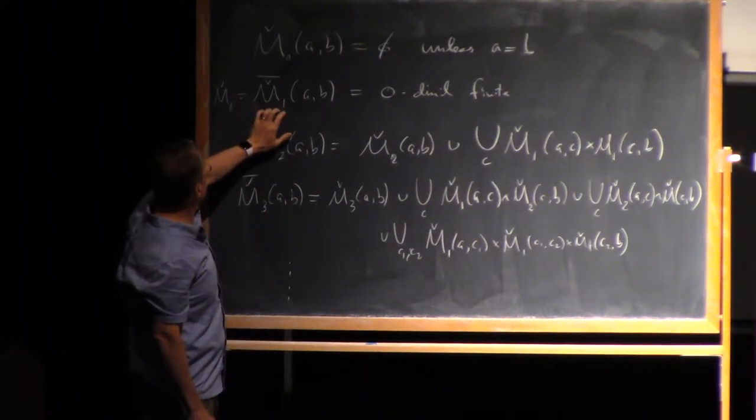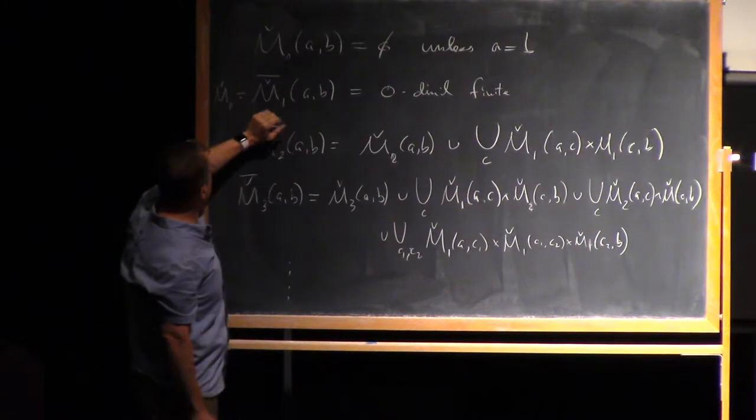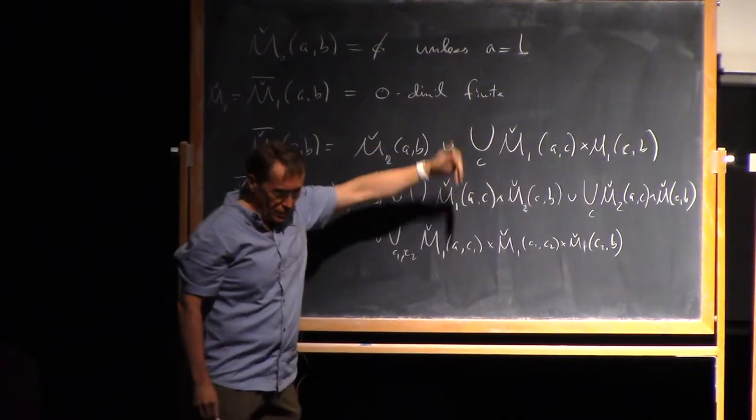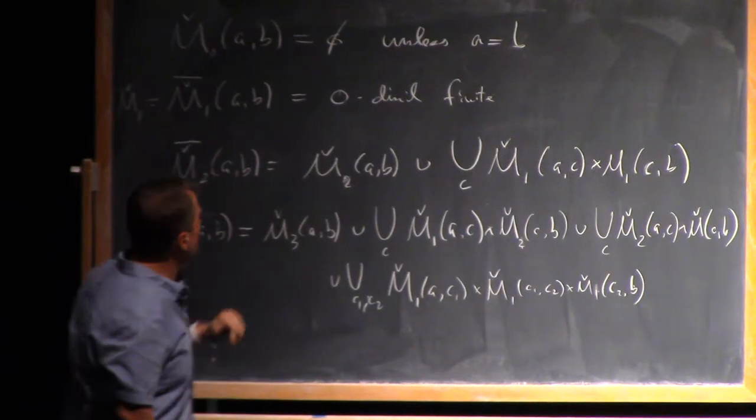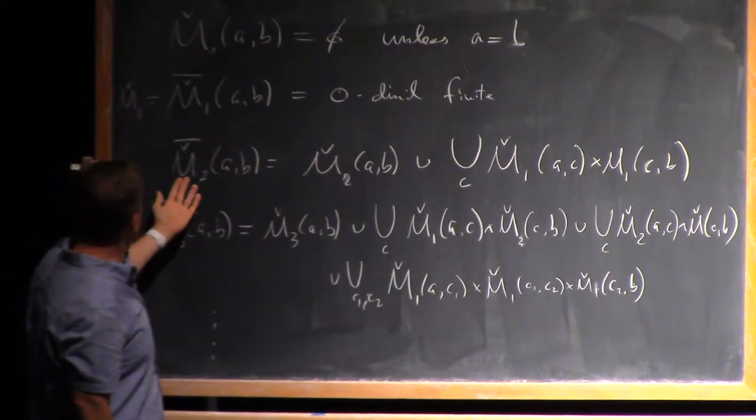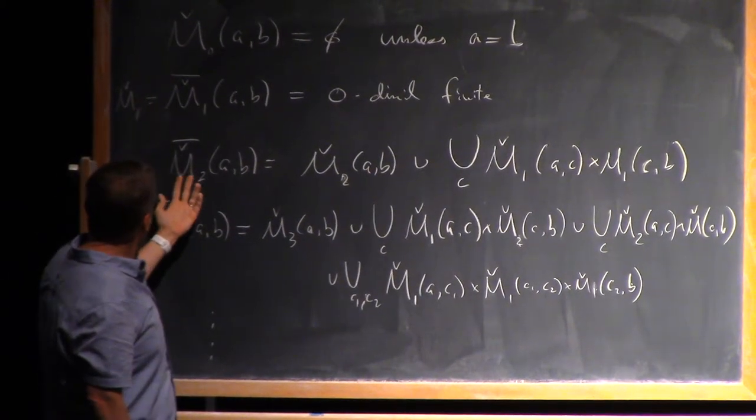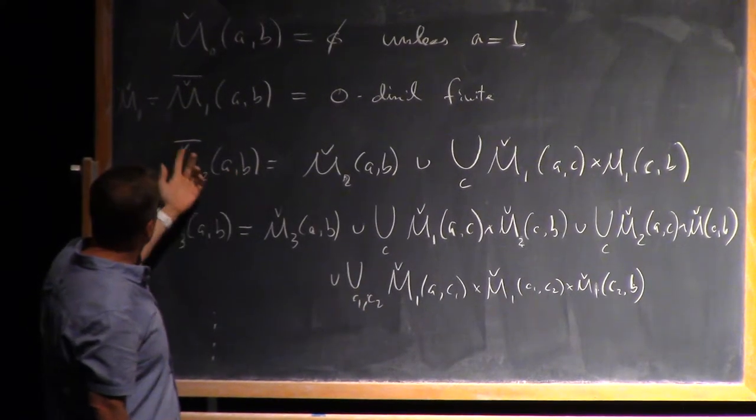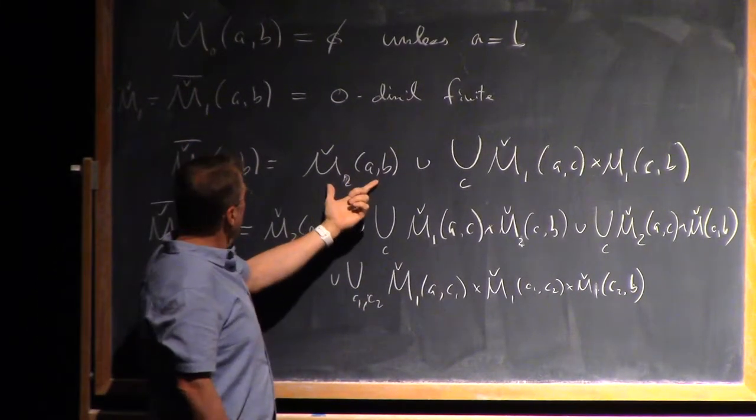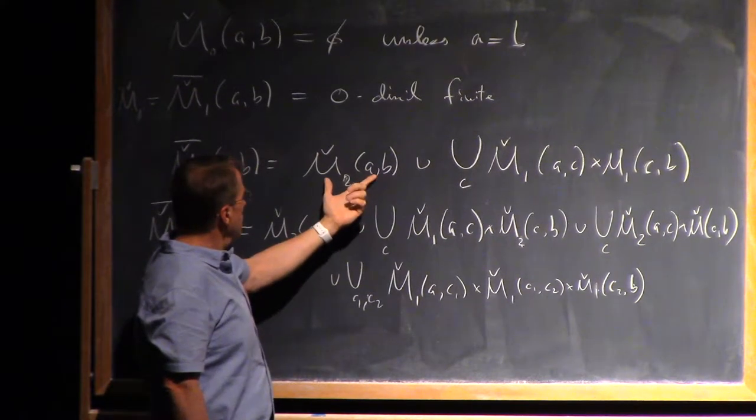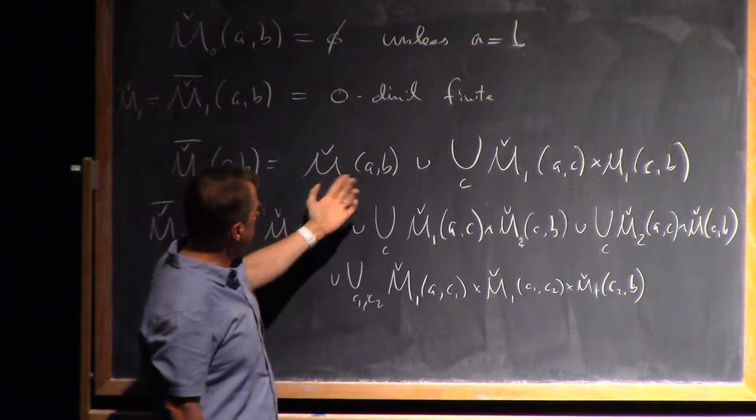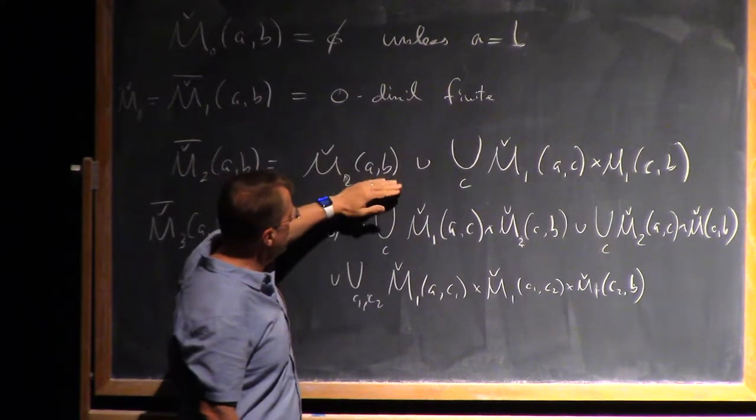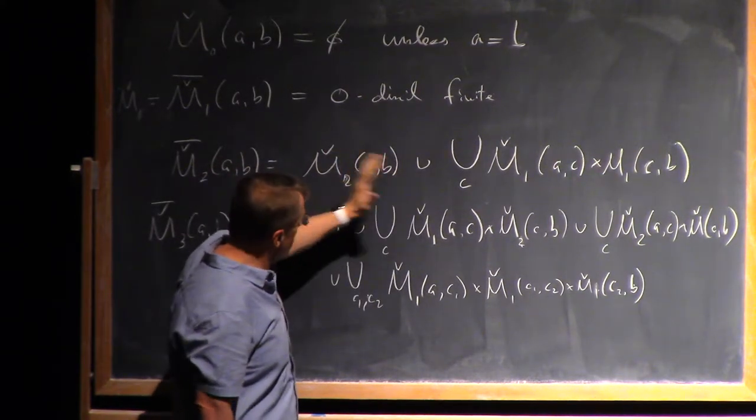If there's a one-dimensional moduli space between A and B, then mod translation, I get a zero-dimensional set, finite set of points by compactness. And the two-dimensional moduli space mod translation, if I compactify it, consists of the top stratum which is one-dimensional, and it's the two-dimensional moduli space mod the one-dimensional action, the group of translations.